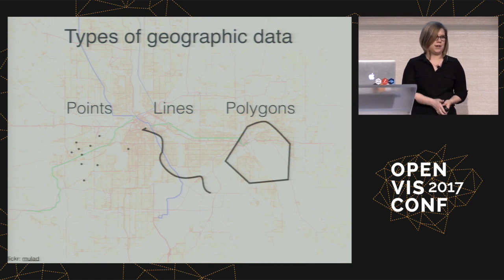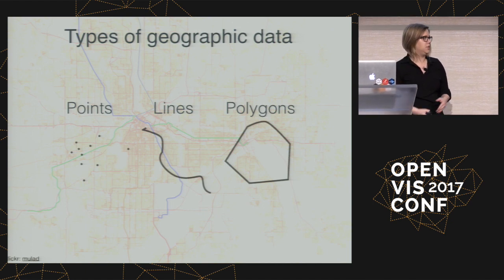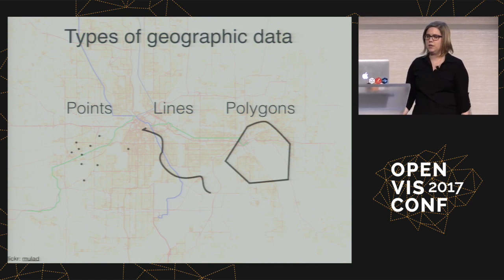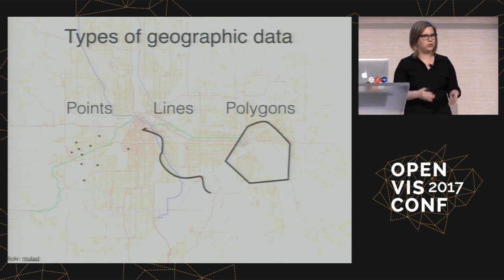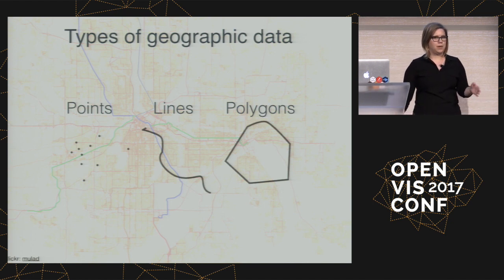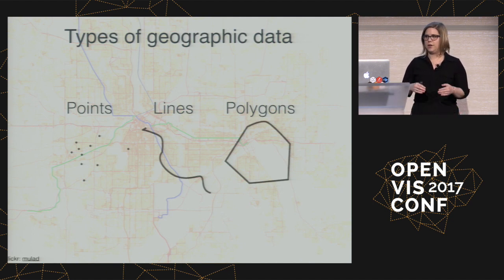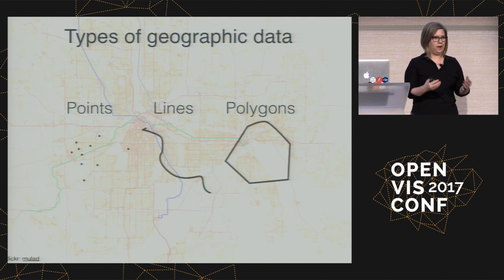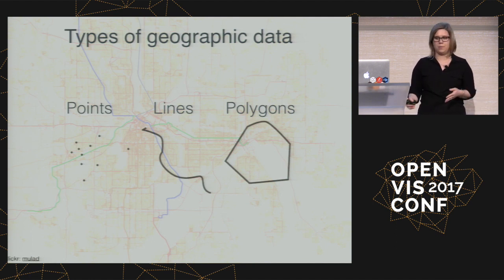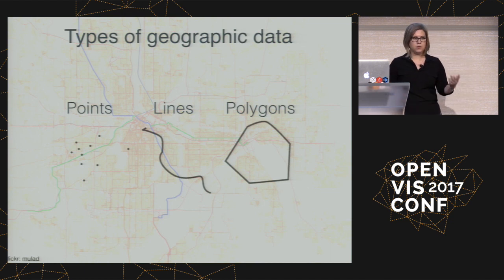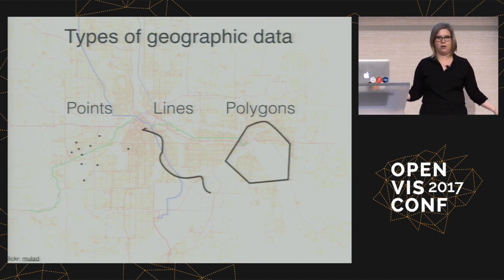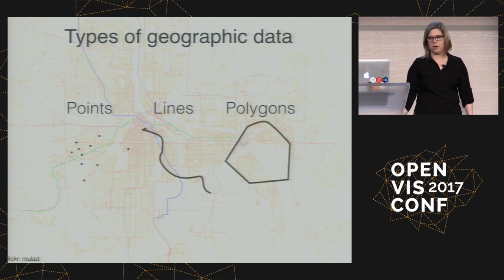When I think about geographic data, I think about three main types. I think about points, which might be where people are, or trees, or houses. I think about lines, maybe rivers or roads. And then the part I'm most interested in are polygons — closed shapes that might describe some area, usually larger ones that contain some amount of human population.